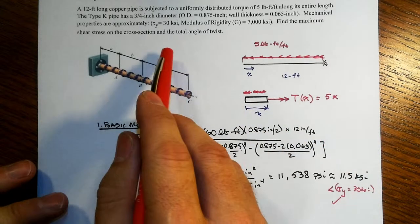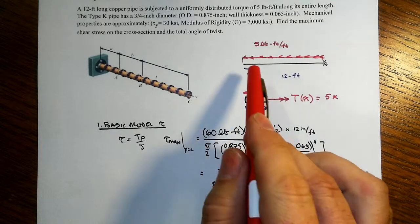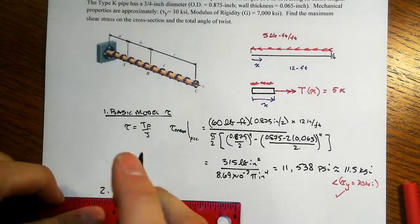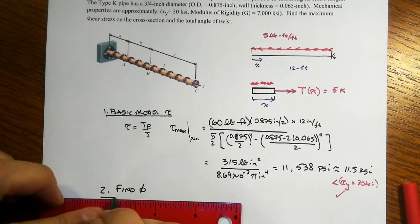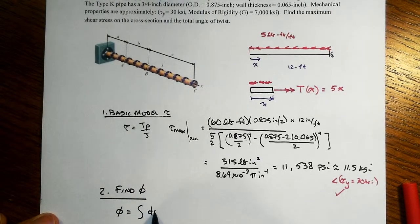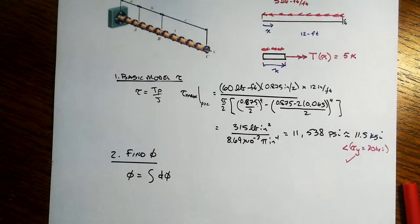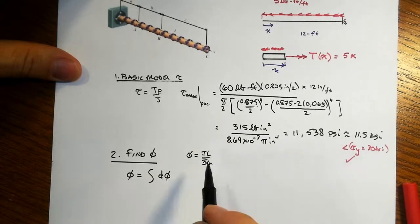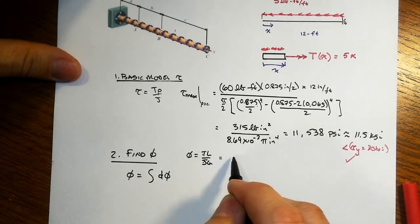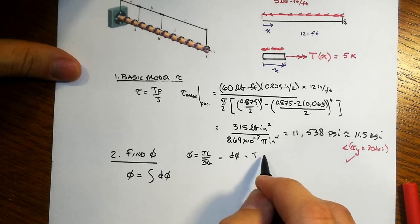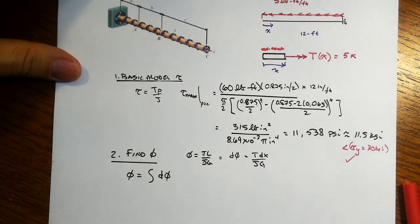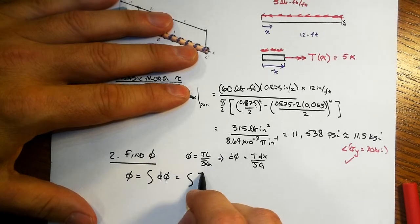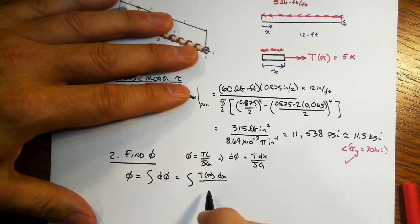For the angle of twist, this is a little bit more complex, because we have a variable amount of internal torque all the way along the length. Since we know we're assured of elastic behavior, to find φ we're going to have to do incremental analysis — add up all of the incremental rotations along the length. Our basic model is φ = TL/JG when all three quantities are constant, but if T varies, dφ = T·dx / JG. So we integrate our internal torque function T(x) times dx over JG.